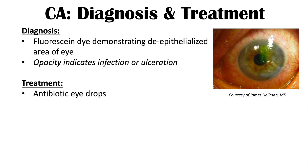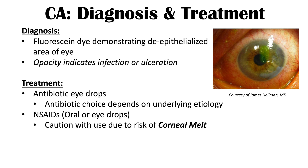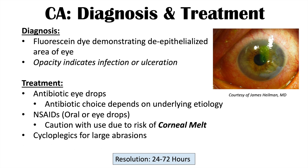Treatment of corneal abrasions typically involves antibiotic eye drops, with the antibiotic chosen depending on the underlying cause. If caused by contact lens use, pseudomonas coverage is important. NSAIDs — either oral or eye drops — can help with pain, though caution is warranted with NSAID eye drops due to the risk of corneal melt and perforation. Cycloplegics may be used for very large abrasions. Resolution often occurs within 24 to 72 hours, though some symptoms like foreign body sensation and light sensitivity can last longer.